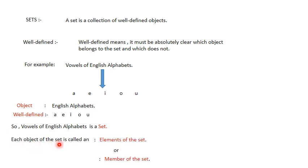Each object of a set is called an element or a member of the set. For example, A is an element of the given set, E is a member, I, O, and U are also elements. So in this set we have five elements - these five are the members of the set, and the set is the vowels of the English alphabets.